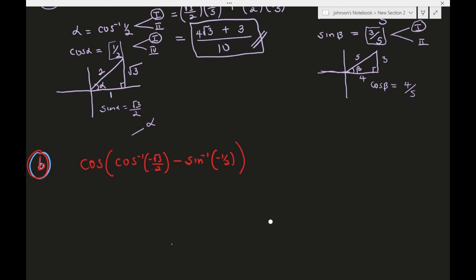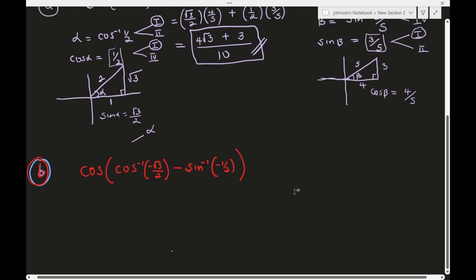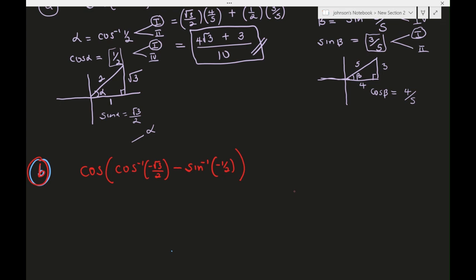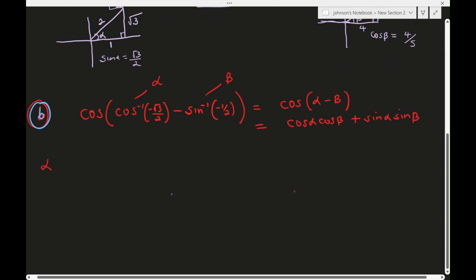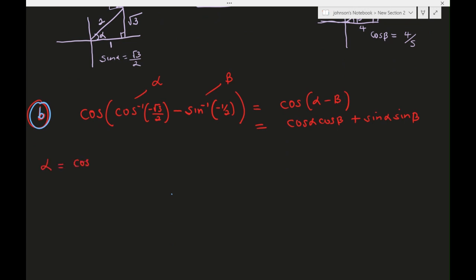Now we continue with part B: cosine of (cosine inverse of −√3/2 plus sine inverse of −1/2). We let this be alpha and this be beta. The problem reduces to finding cosine(alpha − beta), which equals cosine(alpha)cosine(beta) + sine(alpha)sine(beta). Alpha is cosine inverse of −√3/2.